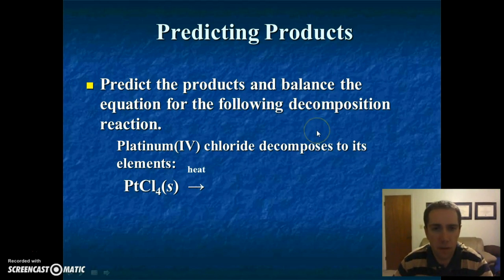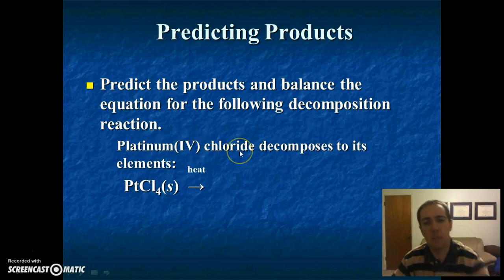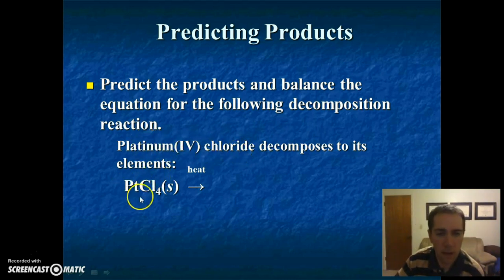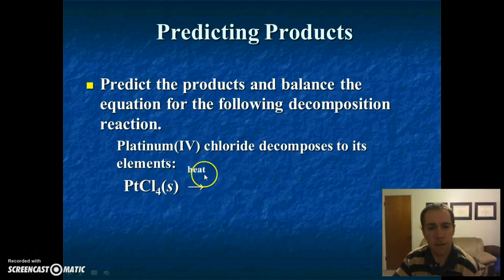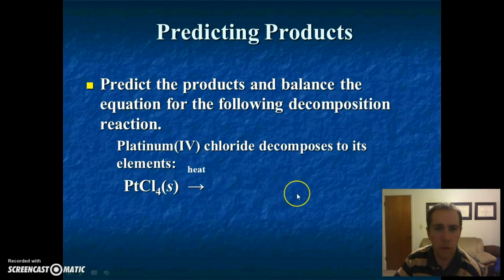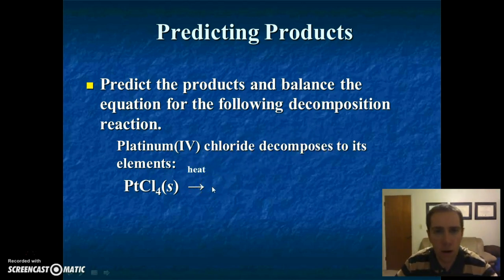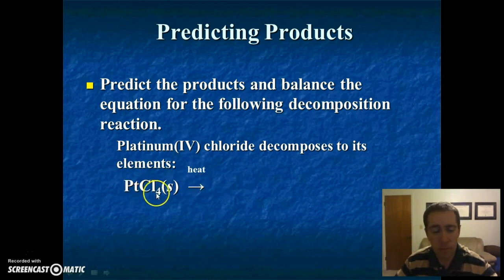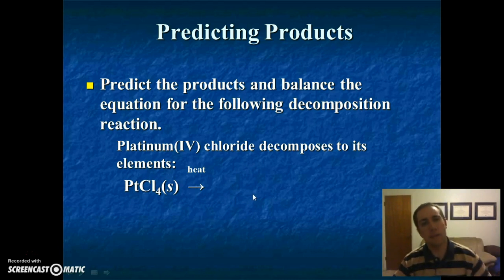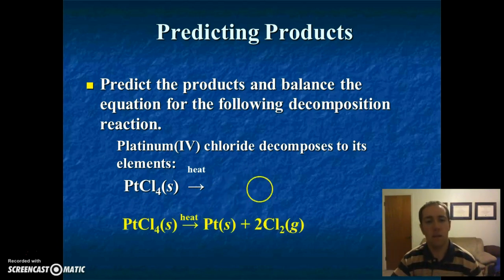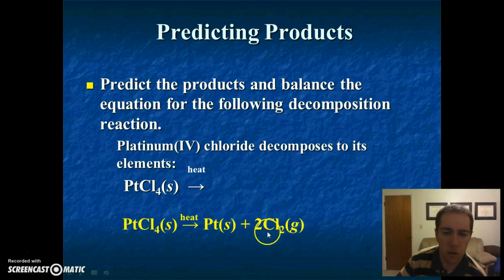Let's practice predicting what things are going to fall apart into. Here we have platinum-4 chloride decomposing into elements. We heat it up and it's going to yield something else. What are the elements in platinum-4 chloride? We have platinum and we have chlorine. Platinum is a metal, so it's just going to be platinum. Chlorine by itself is a gas — remember, it's diatomic, so it's going to be Cl2, not just Cl. Here is our platinum solid and here is our Cl2.